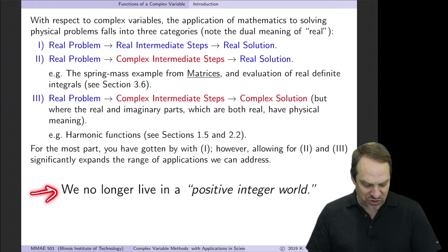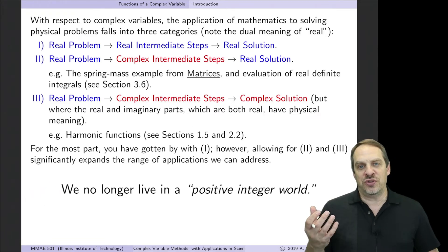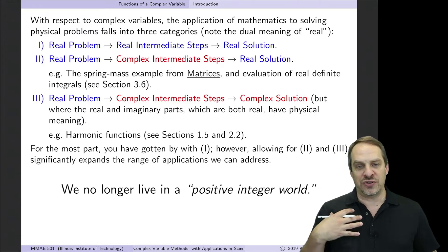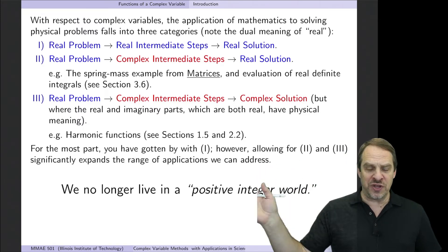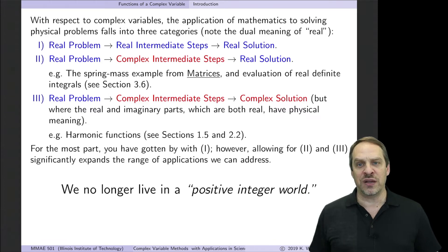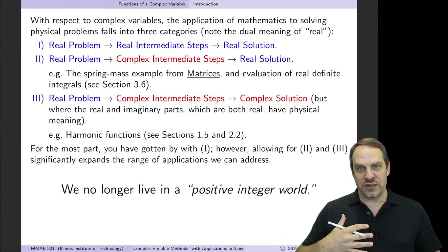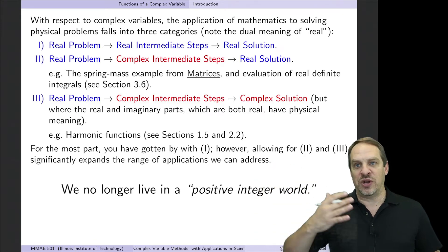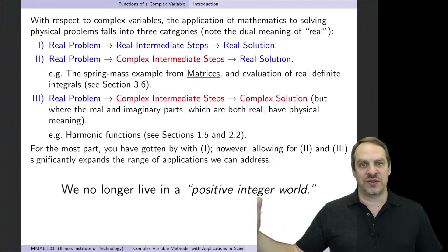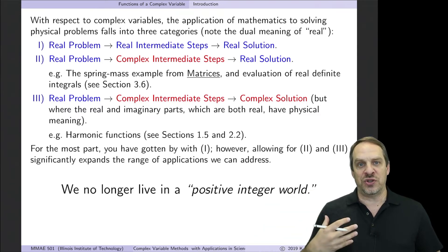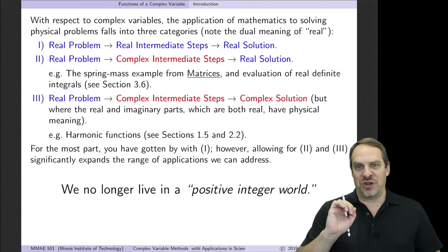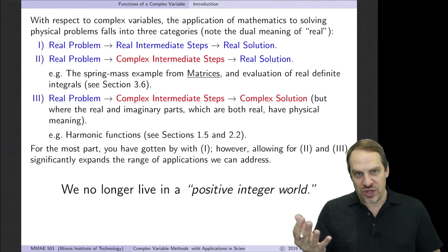Now, this statement here at the end, we no longer live in a positive integer world. What I'm referring to there is if I happen to be a sheep herder, right? So every morning I send out my sheep, every evening I count them as they come back. Well, I would live in a positive integer world. I have no need for negative numbers because there's no negative sheep. And hopefully I'm not getting fractional sheep back in the evening. So I don't even need fractions. So I live in a positive integer world. That's the only mathematics that I need in order for me to do my job, live my life. Well, we no longer live in a positive integer world. And there was a time they made fun of people doing complex variable theory because they saw no need for it. And they ridiculed it. And that's where the name imaginary number came from.